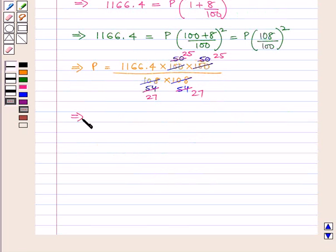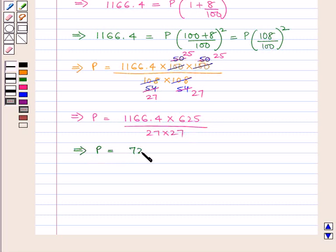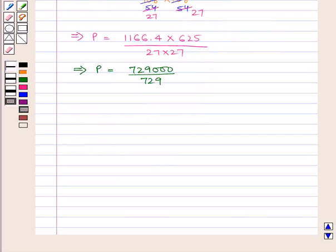P equals 1166.4 times 625 upon 27 times 27, which implies P equals 729,000 upon 729. That is P equals 1000.